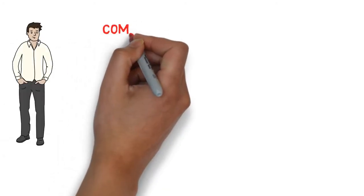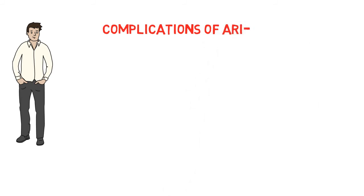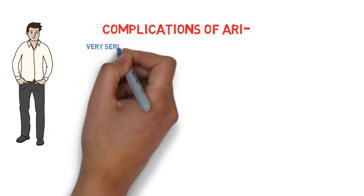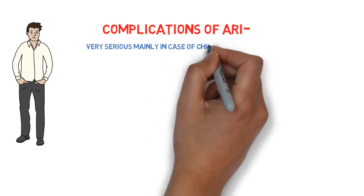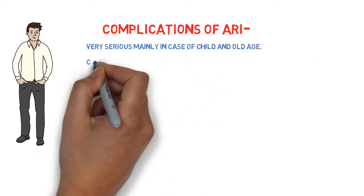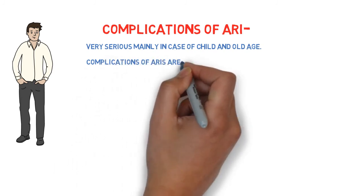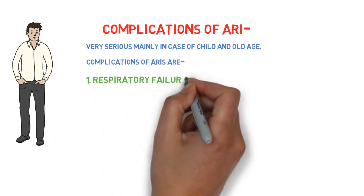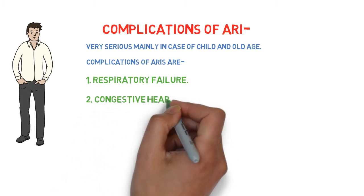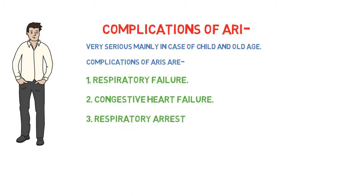Now we will see the complications of acute respiratory infection. Complications are very serious, mainly in case of children and old age. Complications include: number one, respiratory failure; number two, congestive heart failure; number three, respiratory arrest, etc.